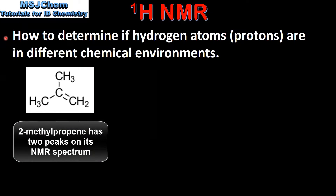Next we look at how to determine if hydrogen atoms or protons are in different chemical environments. We will start by looking at the hydrogen atoms in 2-methylpropene. In this molecule we have two CH3 groups and one CH2 group. The hydrogen atoms in a CH2 group are in a different chemical environment to the hydrogen atoms in a CH3 group. The hydrogen atoms in the two CH3 groups are in the same chemical environment because both CH3 groups are bonded to the same group of atoms, which in this case is a carbon atom double bonded to a CH2 group.